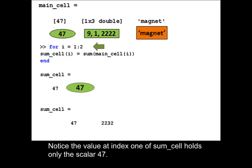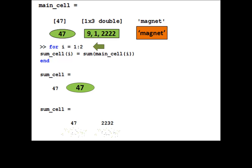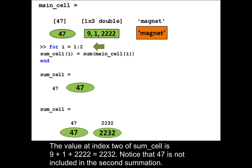Notice the value at index 1 of sum_cell holds only the scalar 47. The value at index 2 of sum_cell is 9 plus 1 plus 2222 equals 2232. Notice that 47 is not included in the second summation.